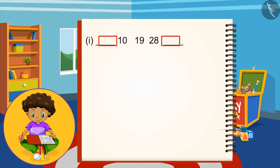Children, you can pause the video to find out the number. You can see that there is a difference of 9 between 10 and 19, and the same difference is between 19 and 28. It clearly means that every time we are moving forward by adding 9 to the previous number.